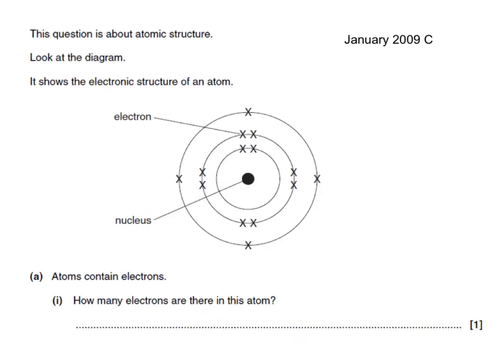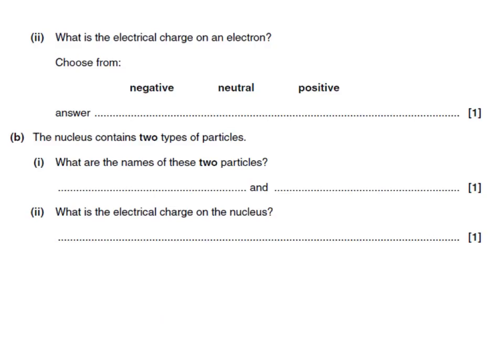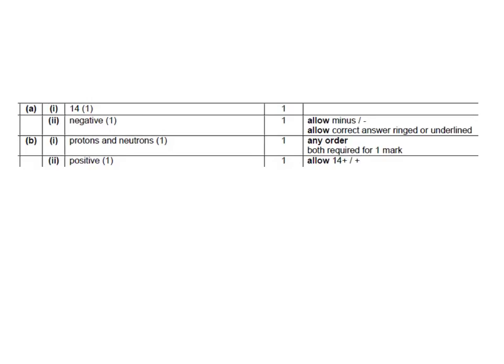Here's another exam question. This question is about atomic structure. Look at the diagram. It shows the electronic structure of an atom. Atoms contain electrons, and look, the crosses are labelled as electrons. How many electrons are there in this atom? Well, simply a case of counting. There's two on the first shell, then eight, that makes ten. Eleven, twelve, thirteen, fourteen. Therefore, there are fourteen electrons in this atom. What's the electrical charge on an electron? Well, an electron is negative. The nucleus contains two types of particles. Which ones are these? Well, these are the protons and the neutrons. And what's the electrical charge on the nucleus? Well, if it contains particles with a positive charge and particles with no charge, then overall, the nucleus must have a positive charge. And there's our answers from the mark scheme.